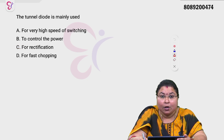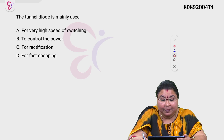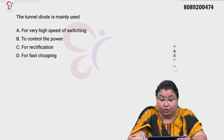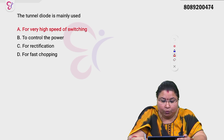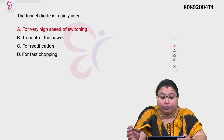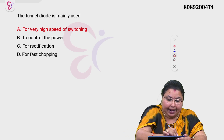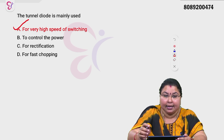The tunneling diode is mainly used for very high speed of switching, to control power, for rectification, or for fast chopping. The tunneling diode is mainly used for very high speed of switching — that is the correct answer.